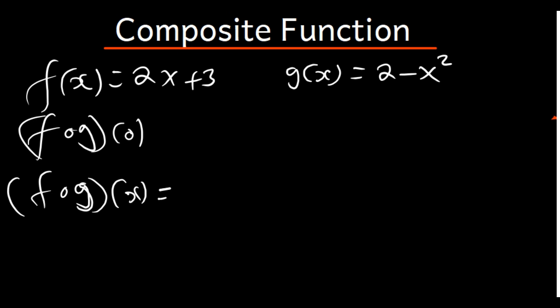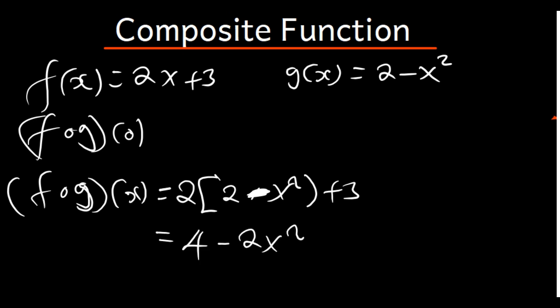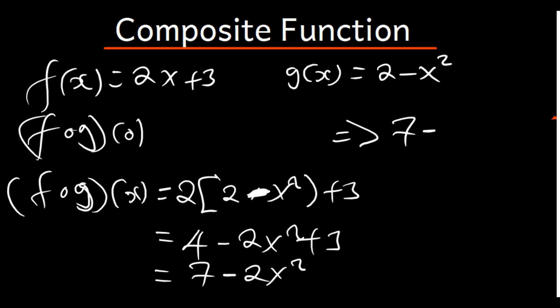To find f of g of x: in the function f, where there is x, we put g. So it's going to be 2 times (2 - x²) plus 3. This gives us 4 - 2x² + 3, which simplifies to 7 - 2x². Now we replace x with 0: 7 - 2 times 0 squared equals 7 - 0, which is 7. Our final answer is 7.